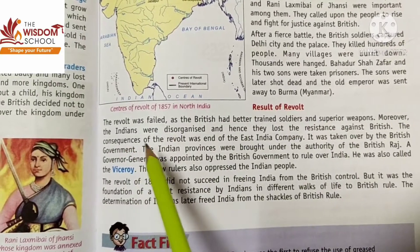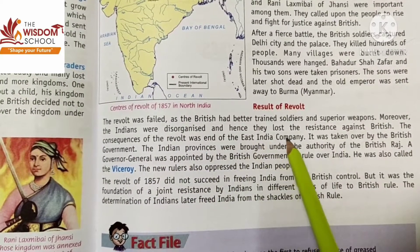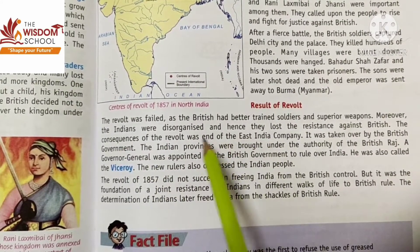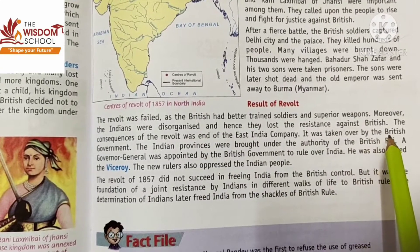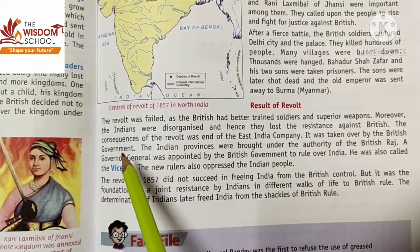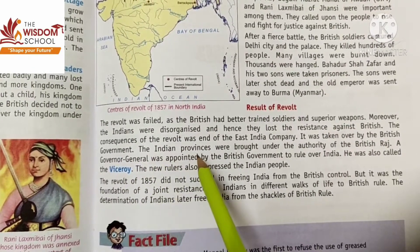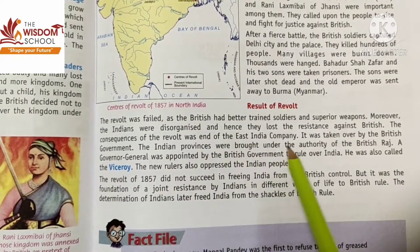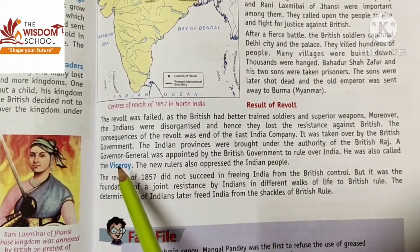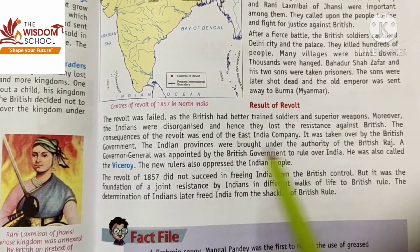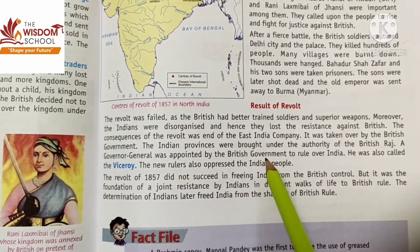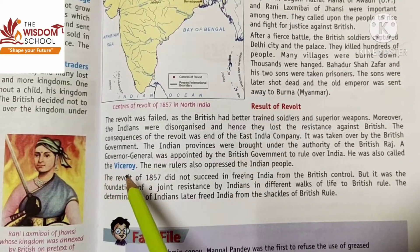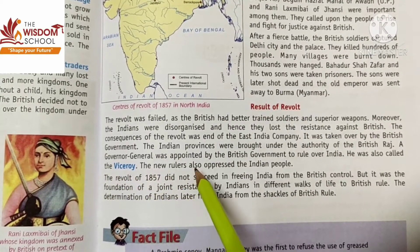The consequences of the revolt included the end of the East India Company. It was taken over by the British government, and the Indian provinces were brought under the authority of the British Crown. A Governor General was appointed by the British government to rule over India, and he was also called the Viceroy.